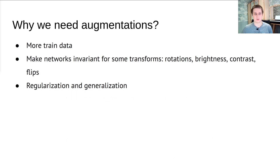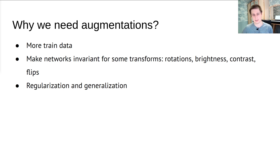Augmentation gives us the opportunity to increase dataset size. For example, if you have 1000 images, after a horizontal flip we will have 2000 images. If we add a vertical flip, we will have 3000 images. If we combine vertical and horizontal flip, we will have 4000 images — one original image, one flipped horizontally, one flipped vertically, and one flipped both vertically and horizontally. So we have 4 images.